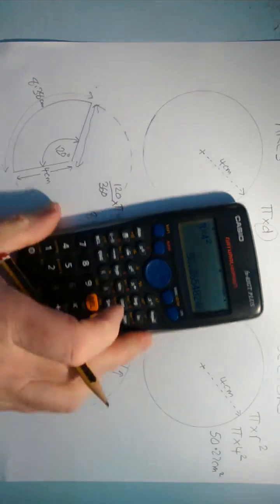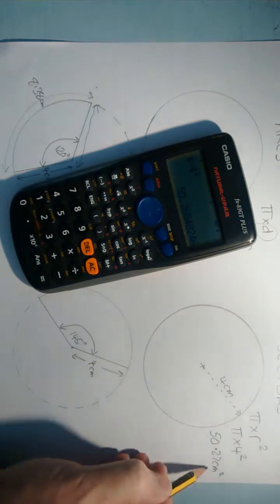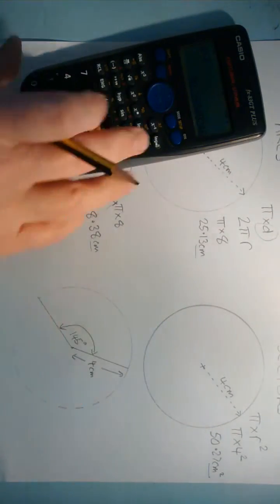And it's square centimeters. Area is always in square centimeters. Lengths are always just in centimeters.